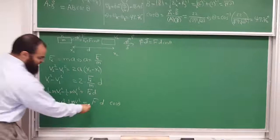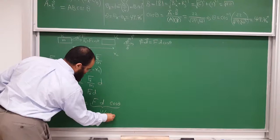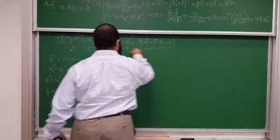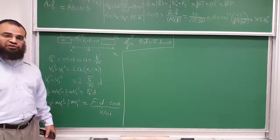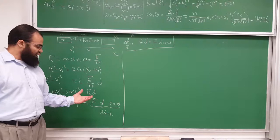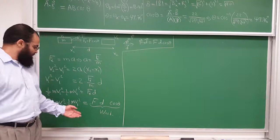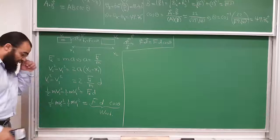Notice that force times displacement times cosine of the angle — F·D·cos(theta) — is like the dot product between two vectors: the force vector and the displacement vector. And this equals ½MV2² − ½MV1². So this is the work done by this force. And this combination ½MV² will be defined — it will be called the kinetic energy.